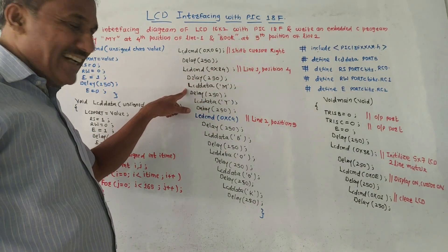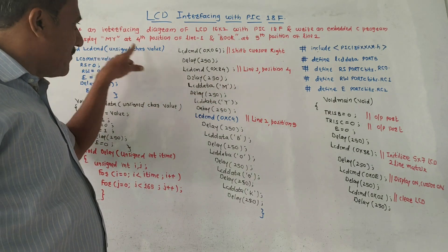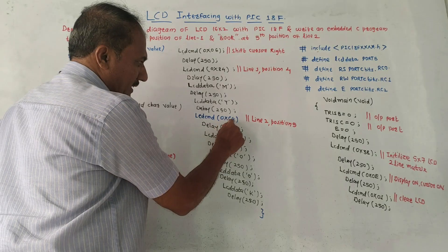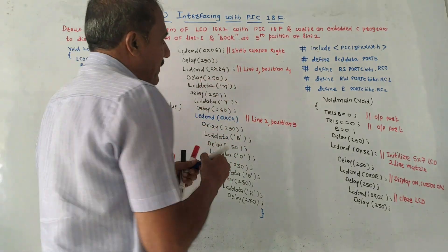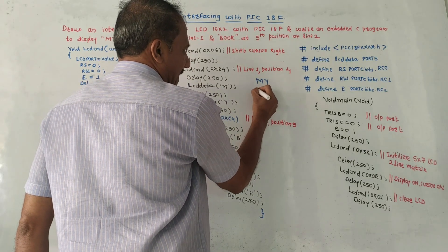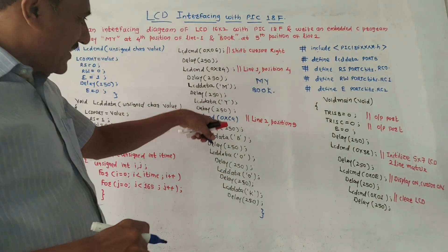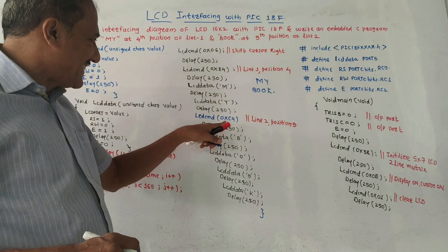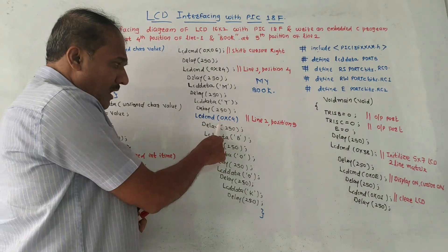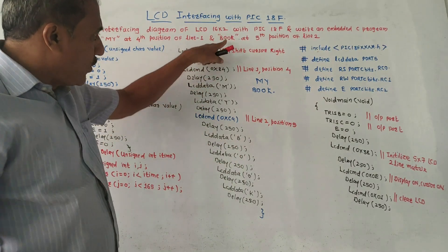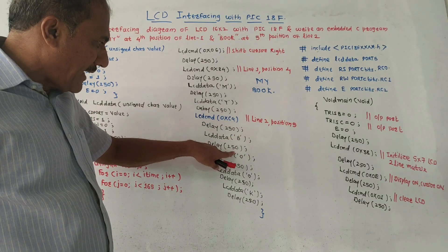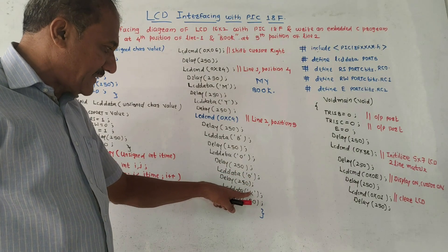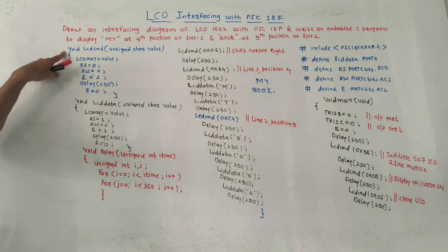Apply delay. Then apply LCD data 'M' — first letter is M. Apply delay. Then LCD data 'Y' — second letter is Y. Apply delay. Then LCD command 0xC4 — for the second line, starting from position 4 (corresponding command is 0xC4). We need to display 'BOOK' on the second line. Apply delay. Then first letter 'B', apply delay. Then letter 'O', apply delay. Then letter 'O', apply delay. Then last letter 'K'.